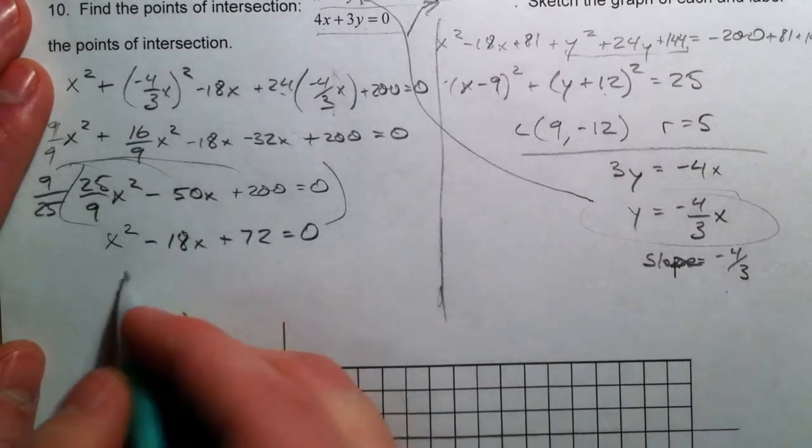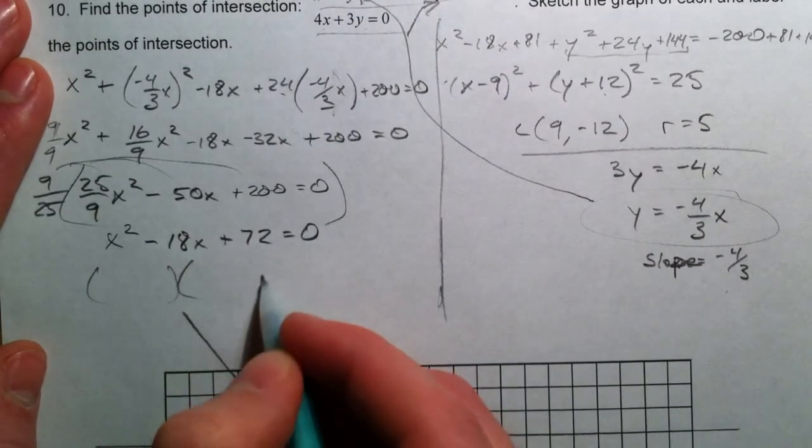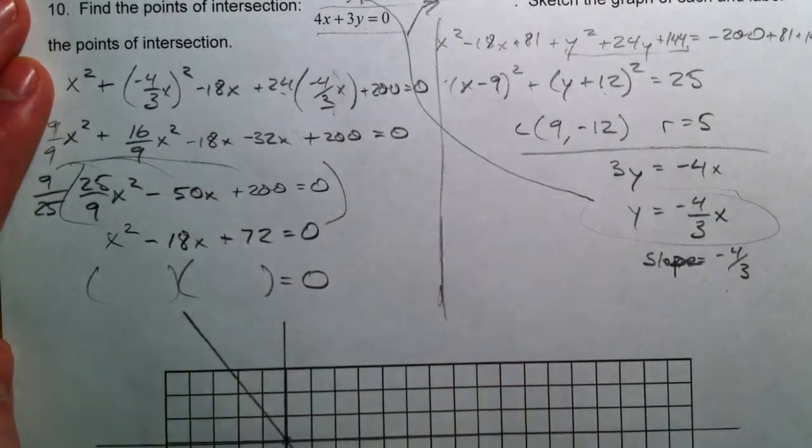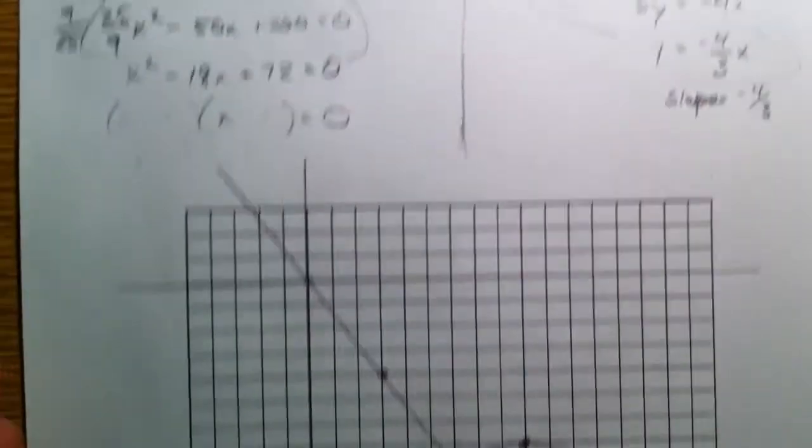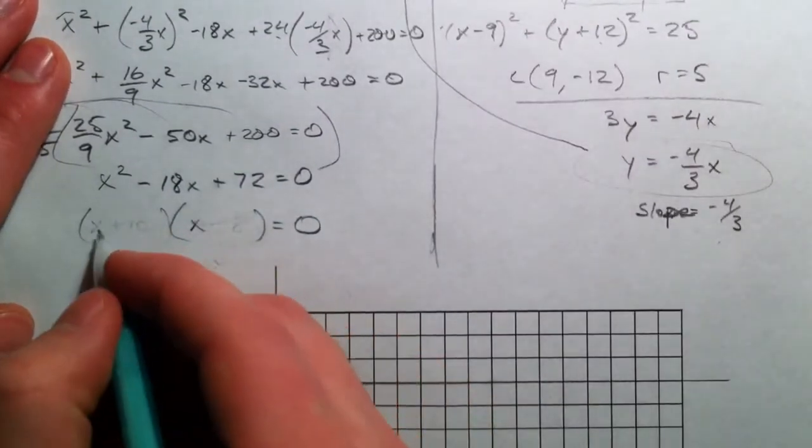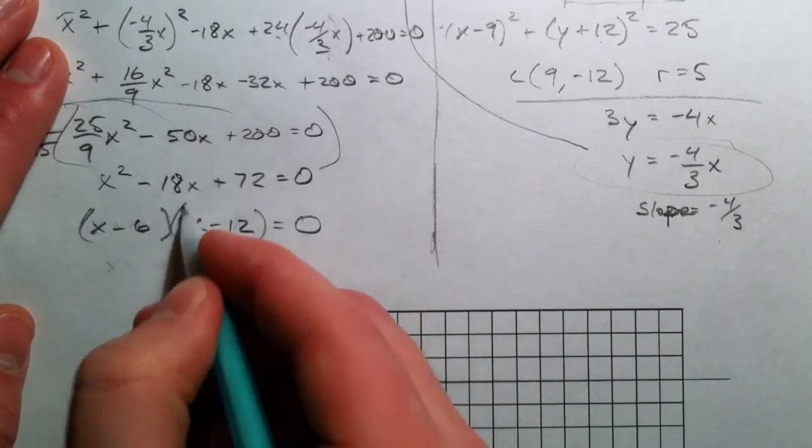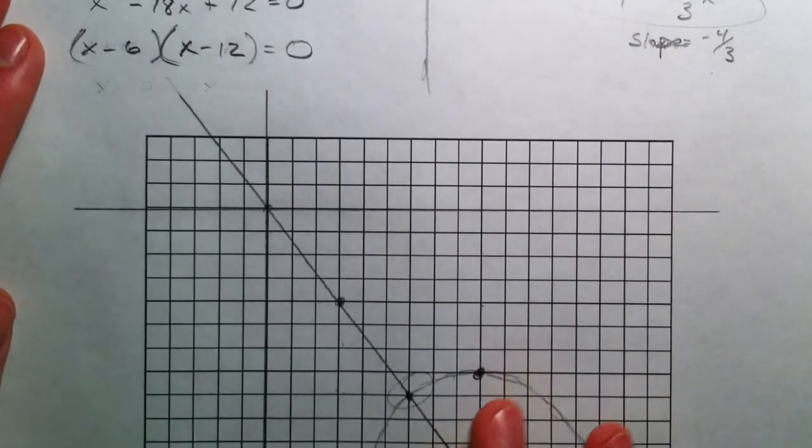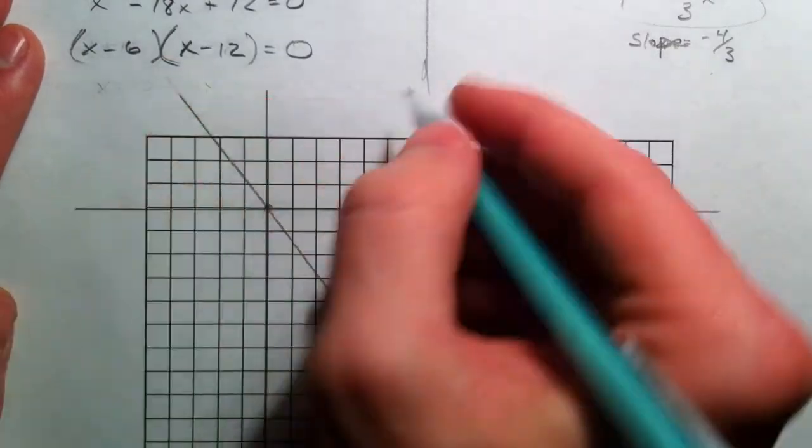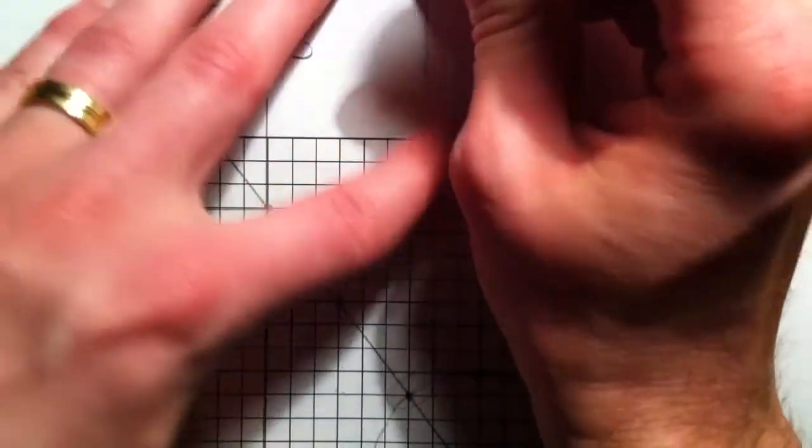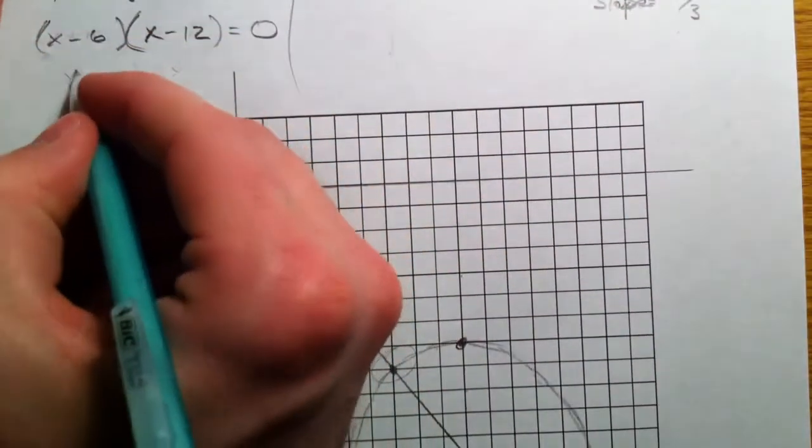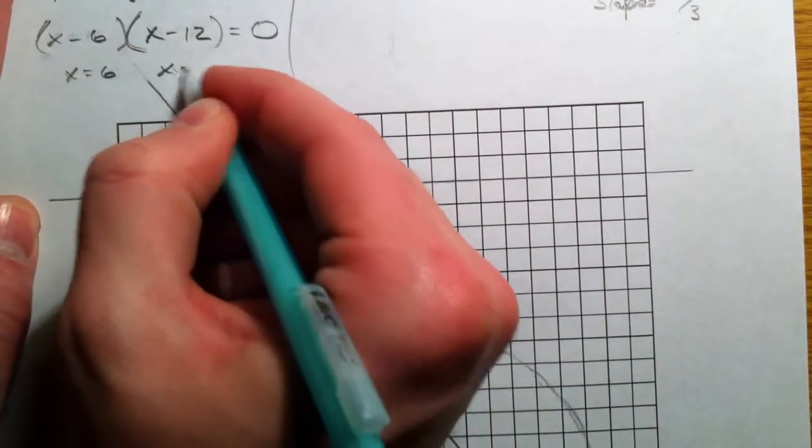So, now we have to answer the question, what times what? We're factoring. So, 6 and 12. x minus 6, x minus 12. They multiply to 18 and multiply to 72. So, you get x equals 6 and x equals 12.